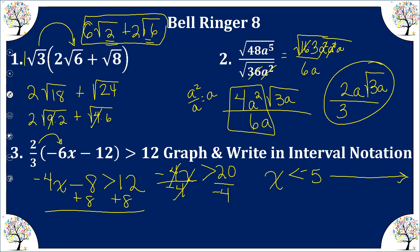Let's draw our number line. We have negative infinity on the left, positive infinity on the right. We're going to consider negative 5. x is not equal, so we have an open circle. And my solution is shaded to the left toward negative infinity.